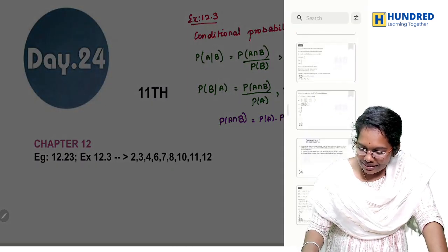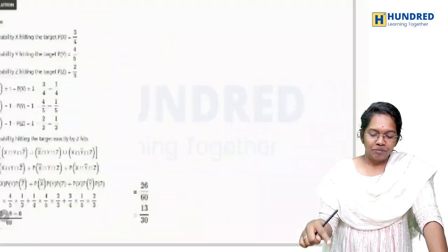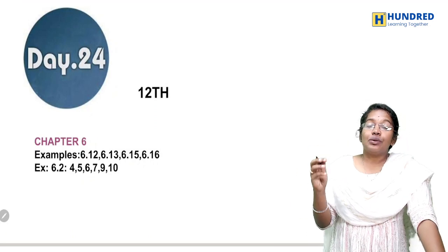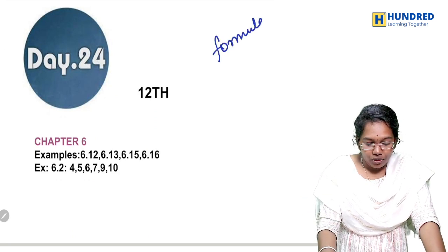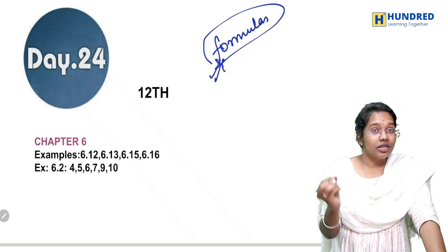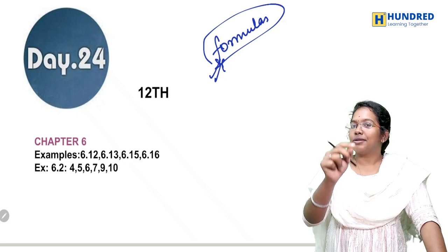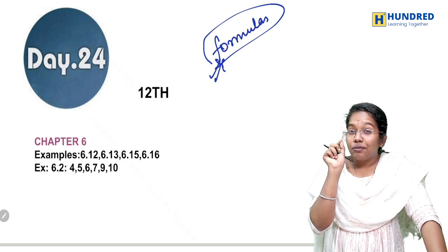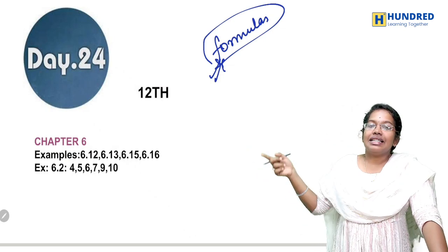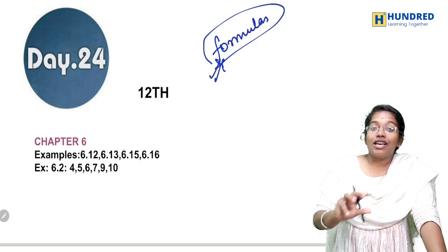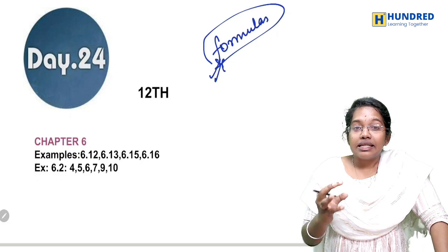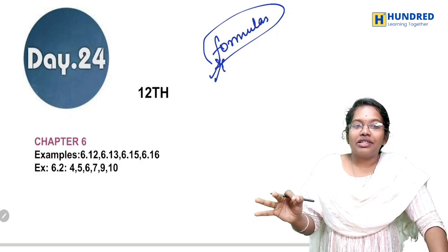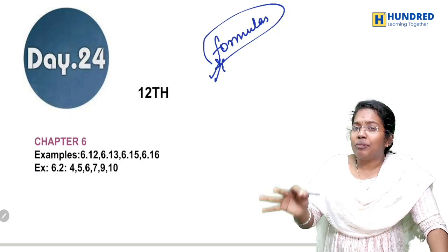For 12th standard students: Exercise 6.1 complete, and examples and exercise of 6.2 pack up. In the formulas, scale up — in exercise 6.2 formulas, first you can search because formula sheets are not available. Just start preparing 6.2, search formulas notes. In the 10 sums you have to get clarity because in the 6th chapter everyone is confused about what is the question and what is the formula.